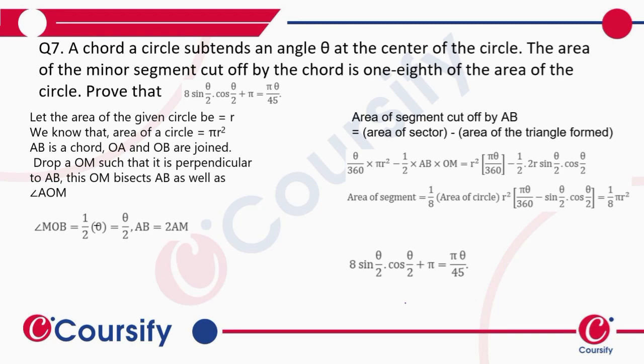A chord of a circle subtends an angle theta at the center of the circle. The area of the minor segment cut off by the chord is one-eighth of the area of the circle. Prove that 8 sin theta/2 cos theta/2 plus pi equals pi theta/45.